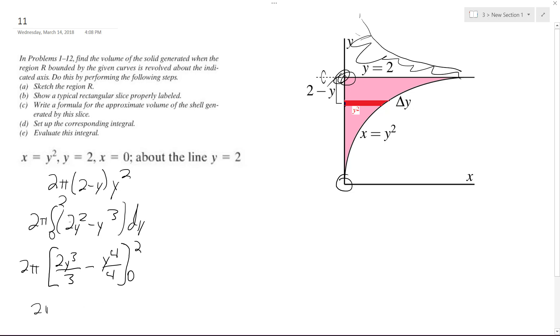And what we end up with is 2π quantity 16 over 3 minus 16 over 4 minus 0. And ultimately, we get 2π times 16 over 12.